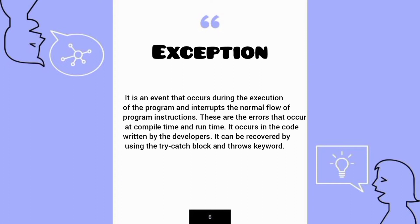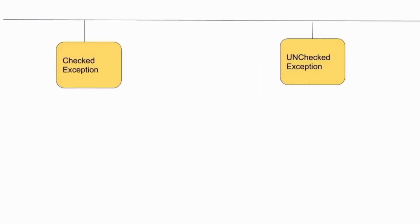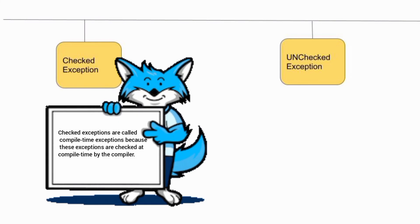There are two types of exceptions: checked and unchecked. Checked exceptions are compile-time exceptions because these exceptions are checked at compile time by the compiler.